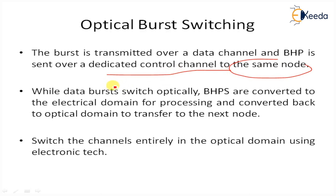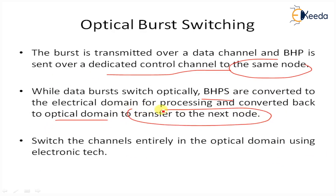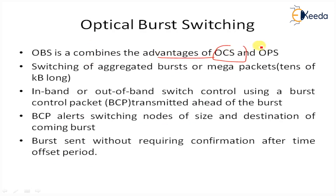While the data burst is switched optically, the BHP — burst header packet — is converted to the electrical domain for processing, then converted back to the optical domain for transfer to the next node. The process assembles packets into bursts at the edge, assigns them to a wavelength channel, and switches them transparently without any conversions. At the destination, they are de-assembled into the original packets, with no need for optical buffering at the node. OBS combines the advantages of both OCS and OPS.